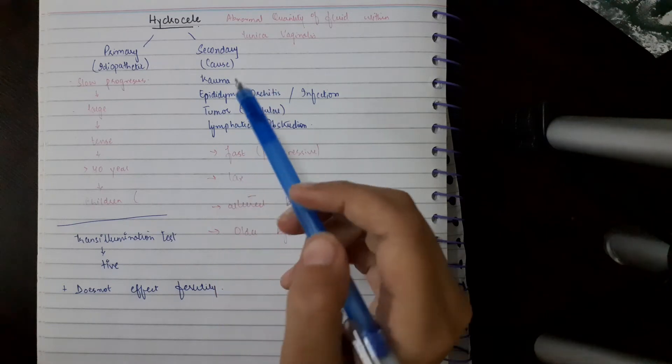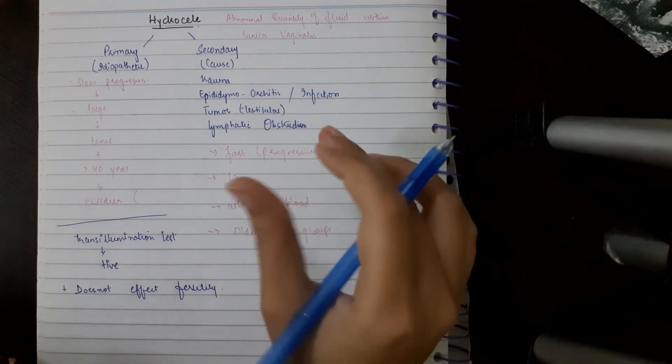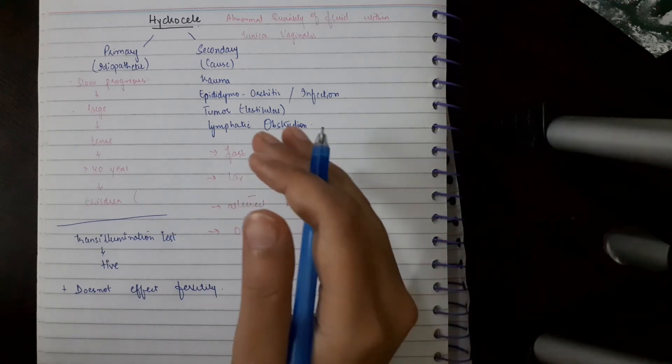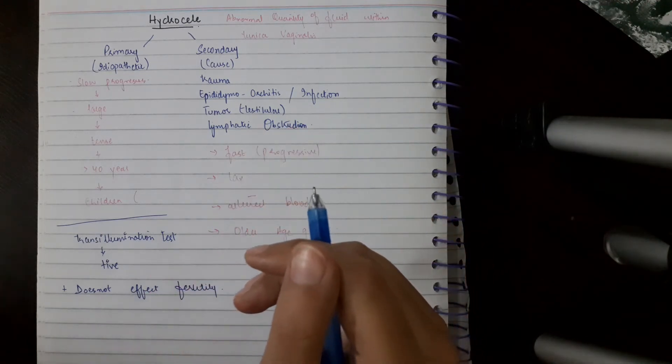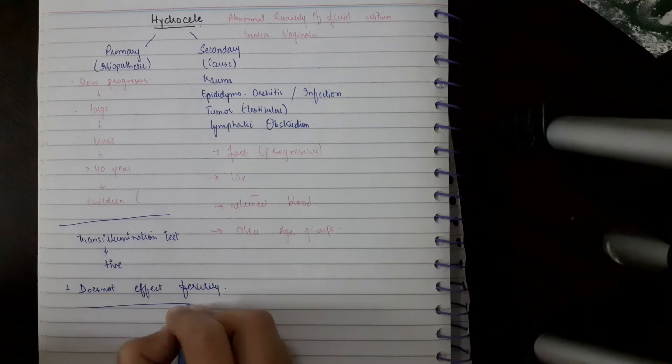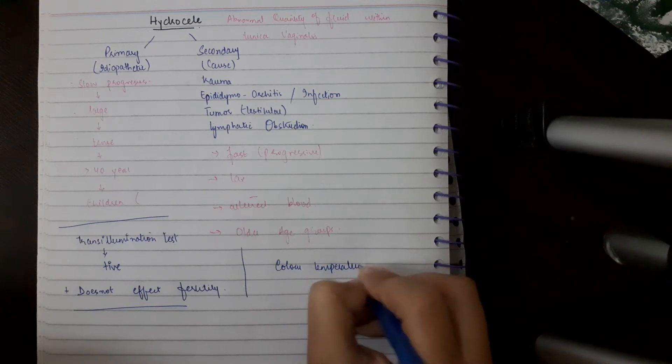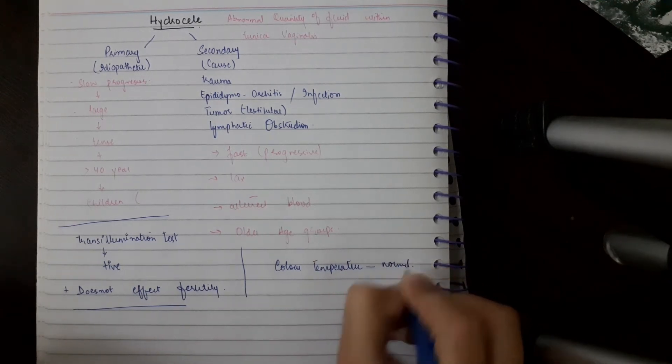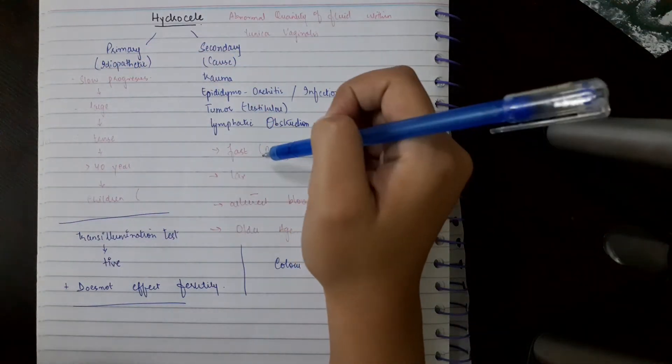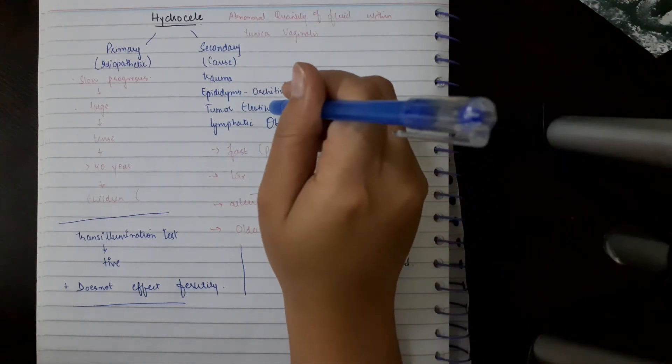On examination, the spermatic cord can be felt above the swelling. This is the most important and diagnostic feature of hydrocele, differentiating it from epididymal cyst. The color and temperature is normal over the scrotal skin. In primary hydrocele there is no tenderness, but in secondary hydrocele it's fast and due to infection, so it may be tender on touch.